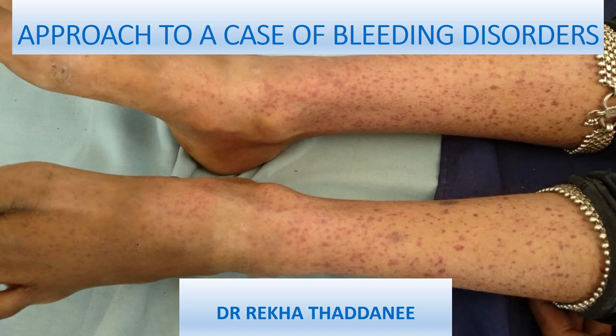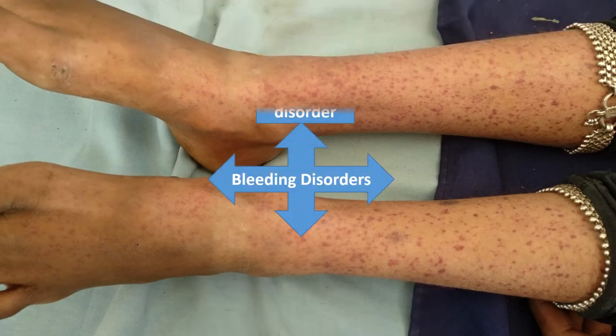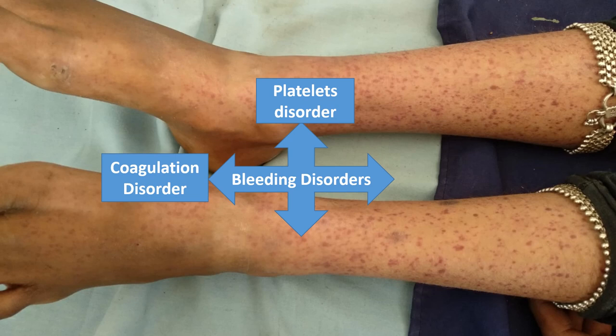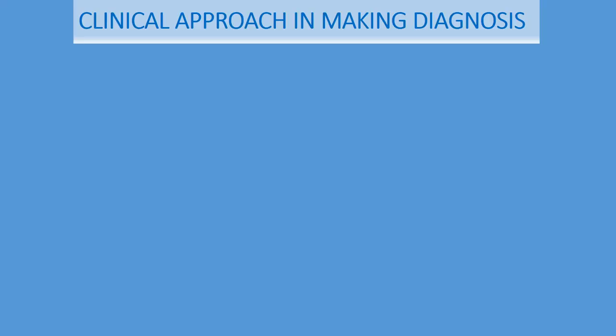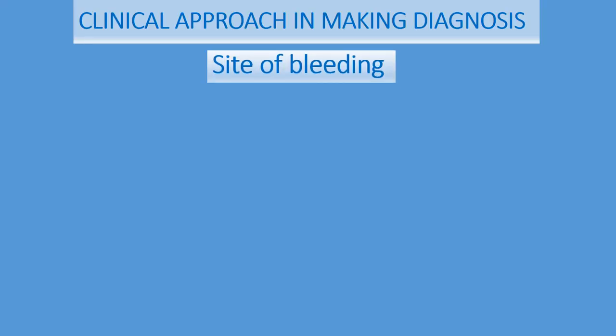Today in this video I will talk about how to approach a case of bleeding disorder. Whenever a patient is presenting with bleeding, we have to think: either it may be a platelet disorder, which is the commonest one, or it can be a coagulation disorder, or it can be von Willebrand disease, or it can be vasculitis. We have to approach all these causes one by one, both clinically and by investigations.